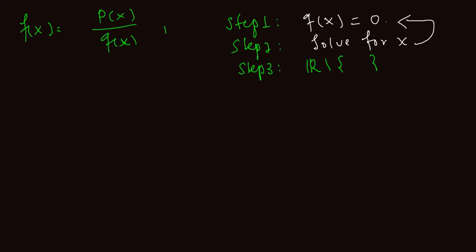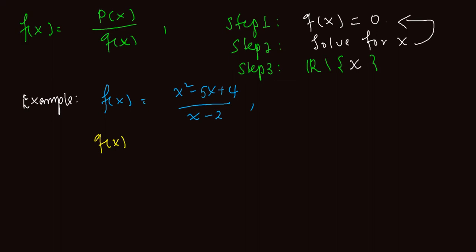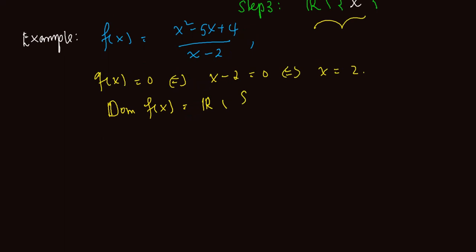For example, consider a rational function where q of x is x minus 2. The first step is to set q of x equal to 0, so x minus 2 is equal to 0. This gives x is equal to 2. The second step is finished. The third step: find the domain of the given function — you can take any real number except the restricted one, which is the solution of q of x equal to 0.